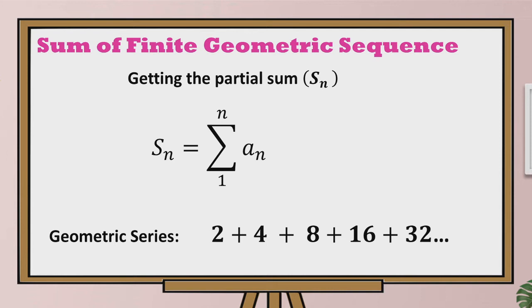So in symbols, we write S sub 2 equals 2 as our first term plus 4, since we are only going to find the sum of the first two terms. And the first two terms are 2 and 4. Therefore, S sub 2 is equal to 6.